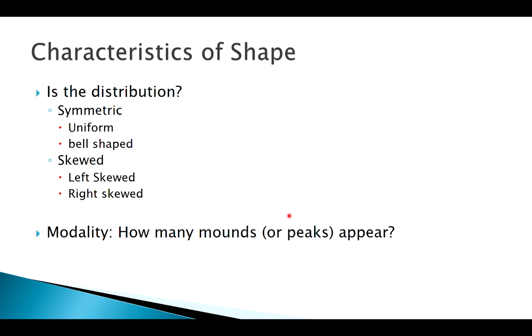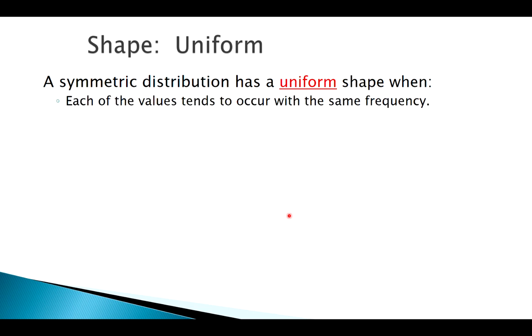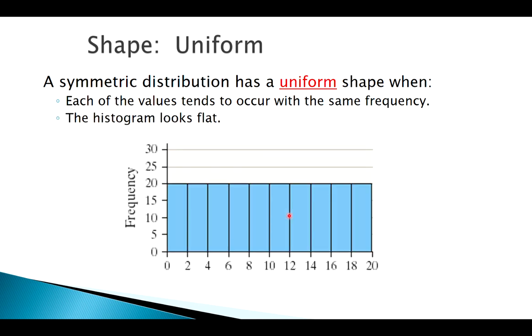Let's look at some of these symmetric shapes first. Let's look at uniform shape. Uniform shape, as it might sound, means everything's even across the board. Each potential value of this variable occurs with the same frequency. So if you imagine a histogram of a uniform distribution, it's not very exciting - it's just kind of flat, just a straight rectangle looking deal.